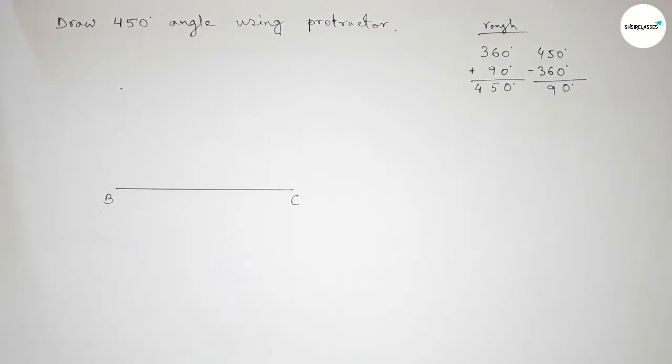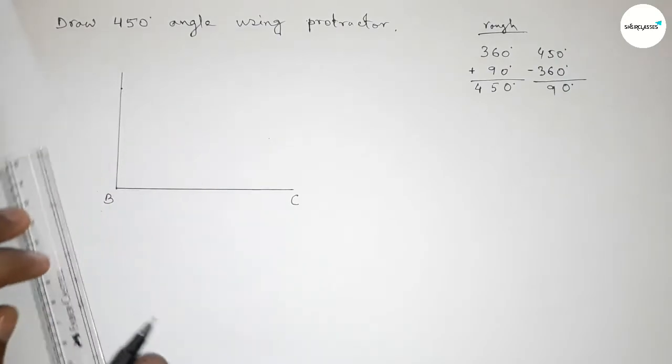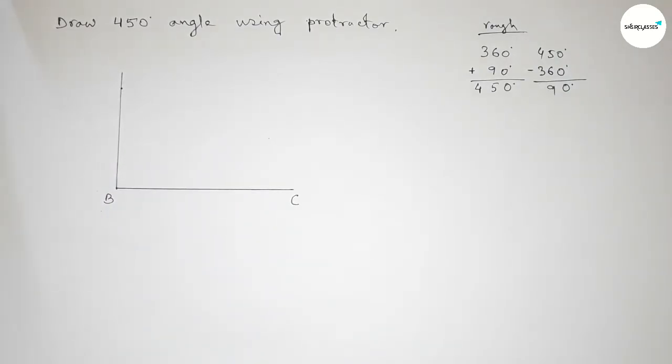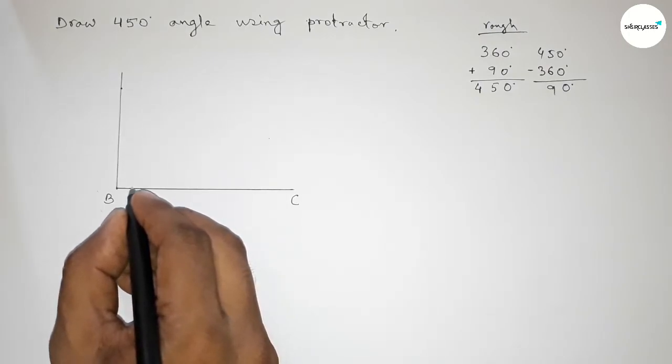Okay, now joining this line to get here a 90 degree angle and taking here a point. So now counting the angle.